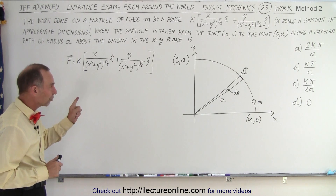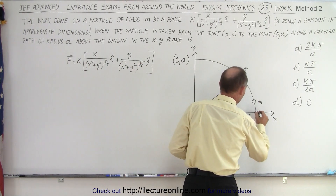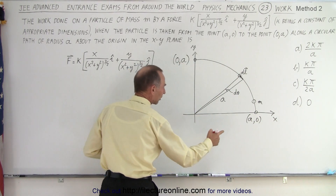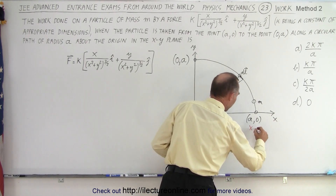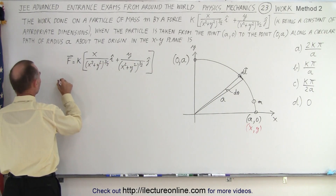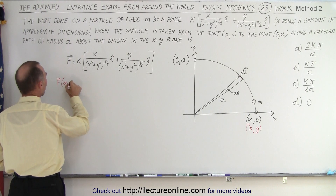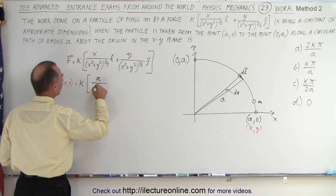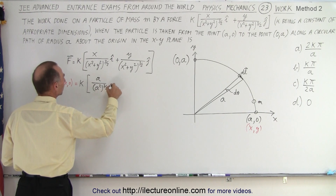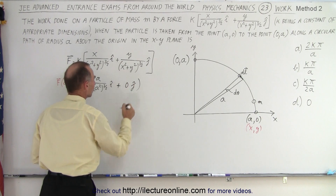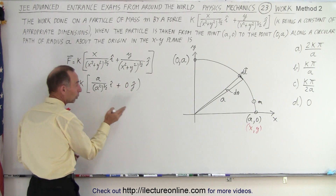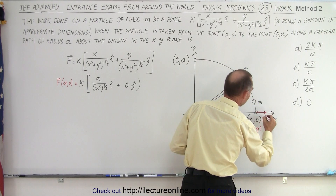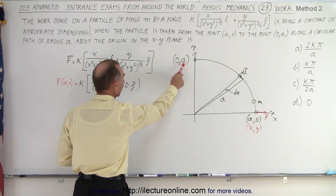Let's determine the direction of the force at some key locations. At location A0, when x equals A and y equals zero, the force equals k times A over (A²) to the three-halves power in the i direction, plus zero in the j direction. So there is only a component in the i direction at this point — the force points in the x direction along this part of the path.